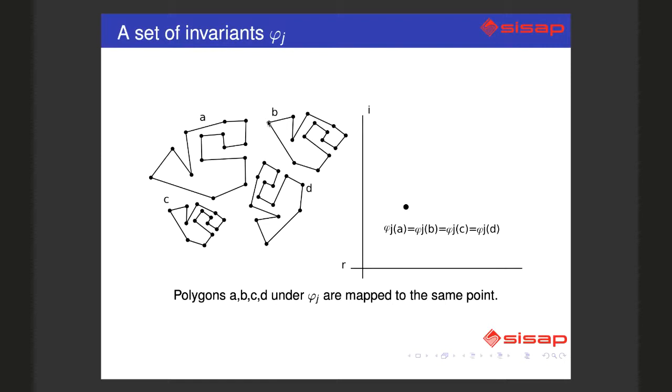But polygons can have noise. In the example we gave about the identification of stars, the camera has noise - all cameras have noise - and the points, the vertices of these polygons, will move just a little.